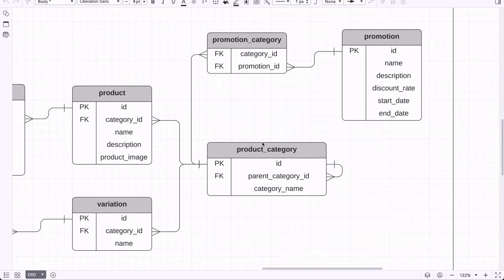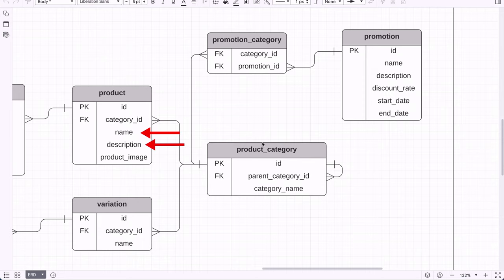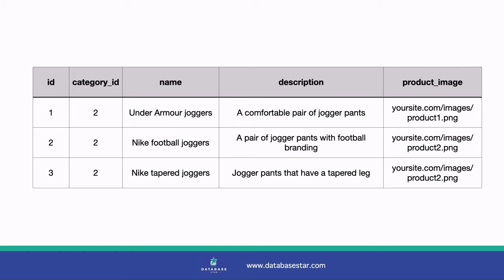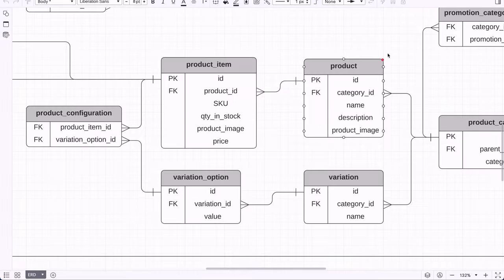Let's look at the product table. This defines what is shown on a list of products page — for example, a slim t-shirt shown once, even though it may come in a range of colours and sizes. In this table we have an ID, a link to the product category, a name and description, and a product image field which stores a link to an image shown on the list page. The table to the left is product item, but we'll come back to that after looking at a few other tables.